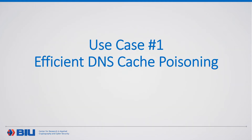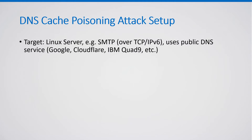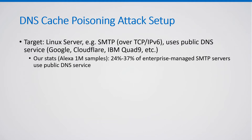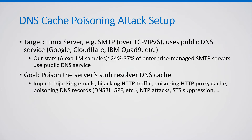Let's take a closer look at efficient DNS cache poisoning. The attack target is a Linux server — for example, one that runs SMTP service over TCP-IPv6 and uses public DNS services such as Google Public DNS, Cloudflare, IBM Quad9, etc. We ran an auxiliary experiment with Alexa's top 1 million domains and found that between 24% and 37% of enterprise-managed SMTP servers use public DNS service, so this is a very realistic scenario.